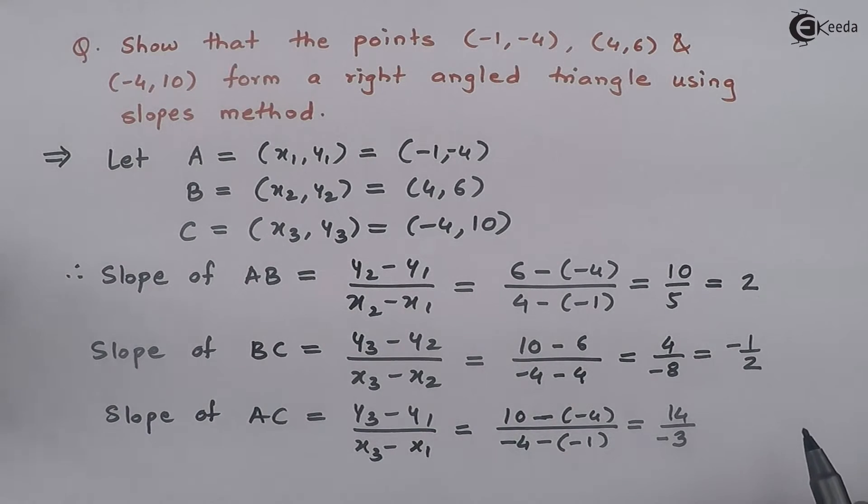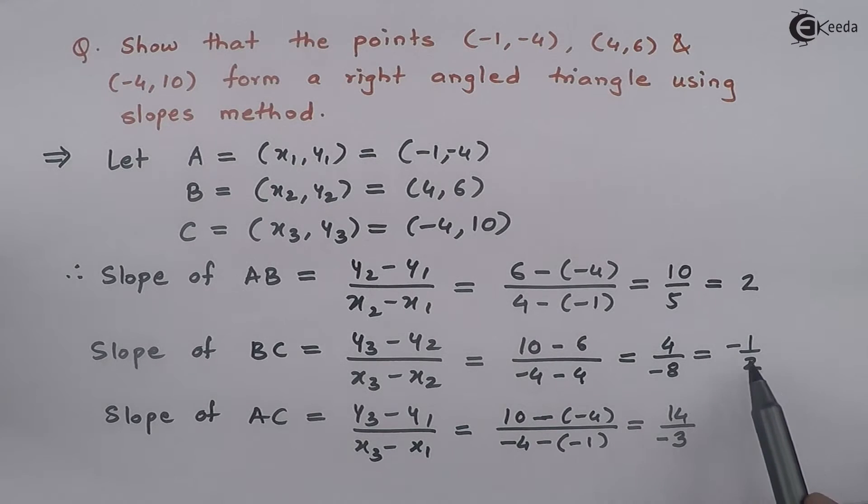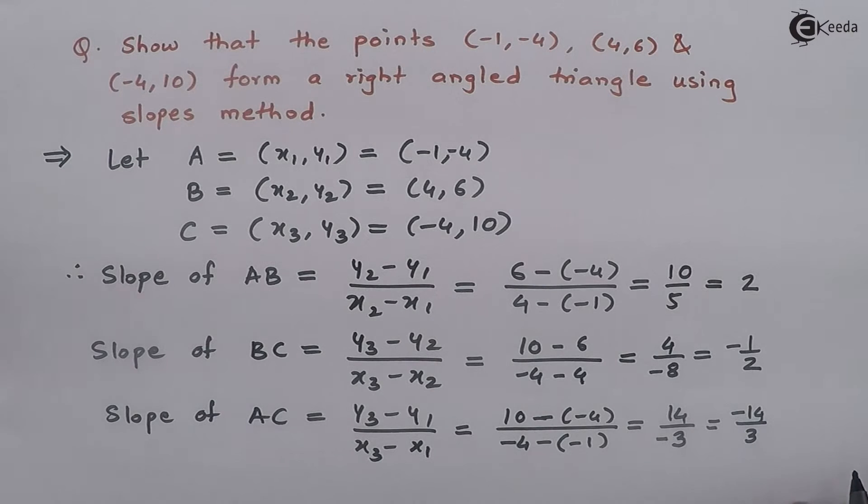We got slope of AB as 2, slope of BC as -1/2, and slope of AC as -14/3. If we multiply slope of AB and slope of BC, we get 2 × (-1/2) = -1. Whenever the multiplication of slopes of 2 lines is -1, these 2 lines are perpendicular to each other.